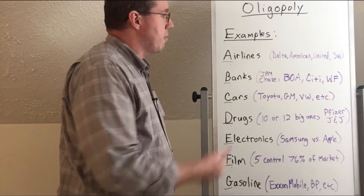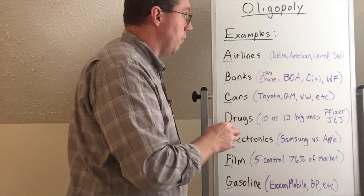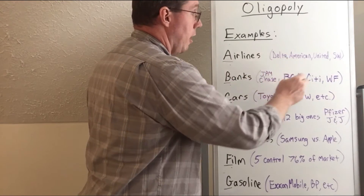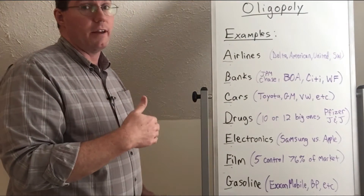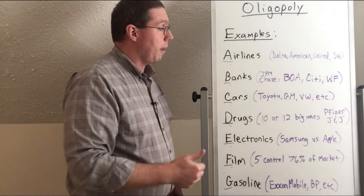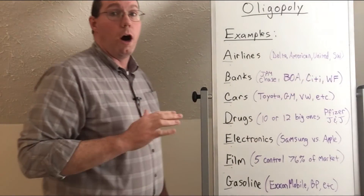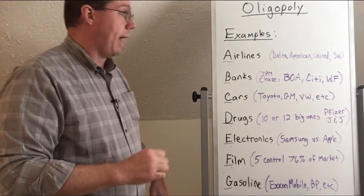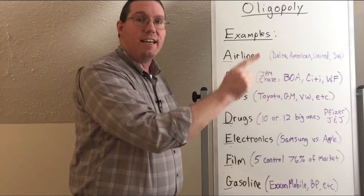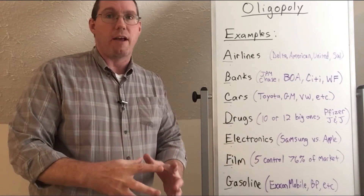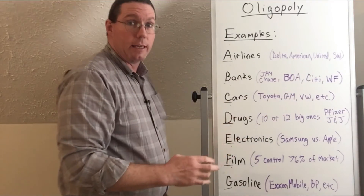Let's talk about some examples of oligopoly markets. The airline industry in the United States is an oligopoly market. The four largest, which control almost all of it, are Delta, American Airlines, United Airlines, and Southwest Airlines — Southwest started as a very small airline that eventually grew and became one of the top four. The banking industry in the United States: JPMorgan Chase, Bank of America, Citibank, and Wells Fargo control the largest capital and assets. Basically, the next 33 banks would have to join together to compete with these four banks — that's how much control they have.